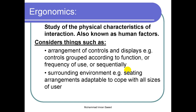Ergonomics also considers the surrounding environment — for example, seating arrangement adaptable to all sizes of users. In labs or classrooms, you have hydraulic chairs where the table size is fixed but the chair height can be raised or lowered depending on your height, so you can manage your seat for comfort. This is how we manage the working environment through ergonomics.